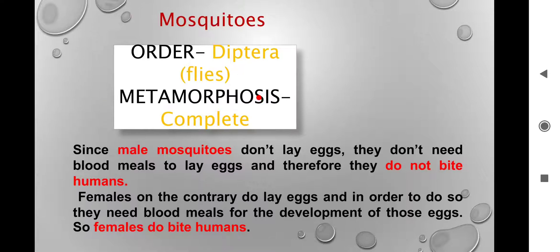When we talk of metamorphosis in insects, there are different kinds, but in terms of mosquito it is a complete metamorphosis. What does that mean? Complete metamorphosis means it is going to start with egg, then change to larva, then pupa, and then adult.